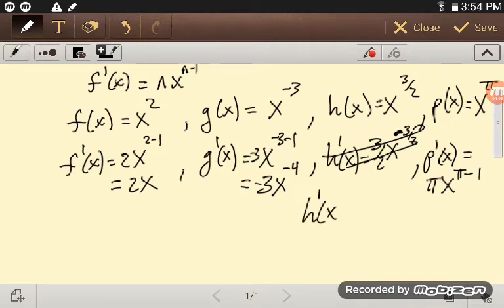h prime of x is equal to, bring down the 3 halves, x to the 3 halves minus 1. That's what I wanted to do. And so, that's 3 halves, x to the 1 half.